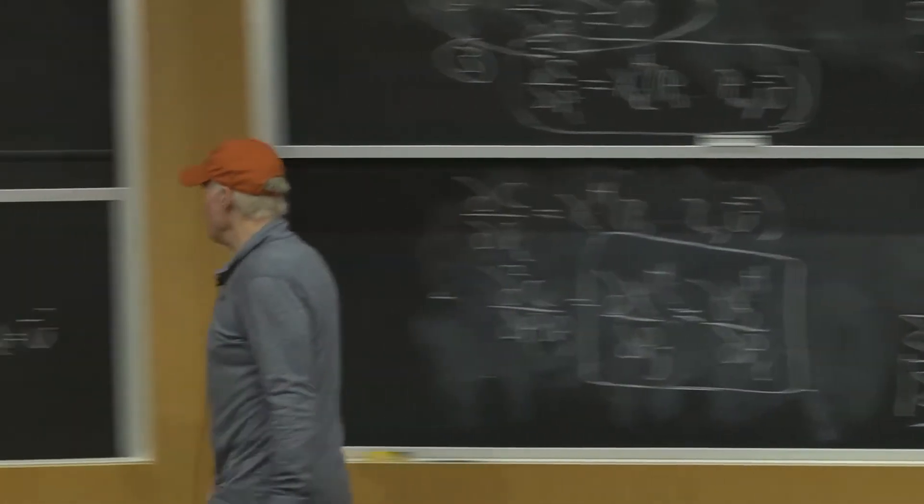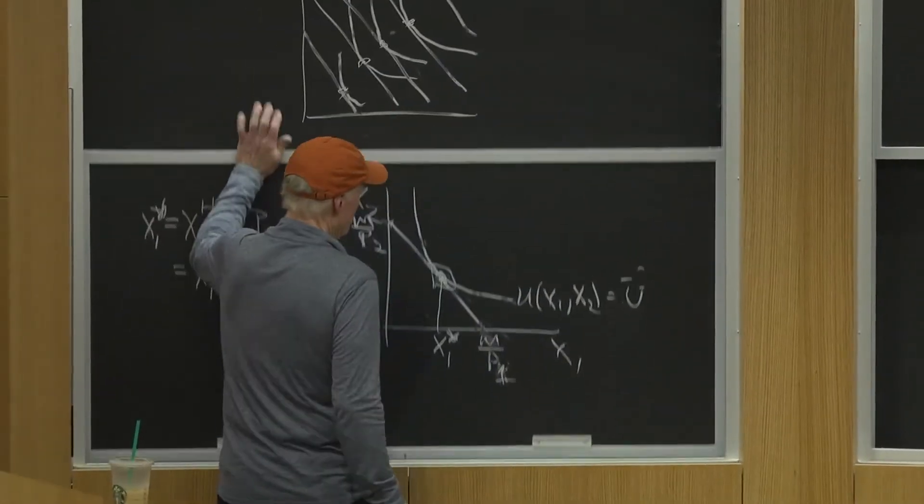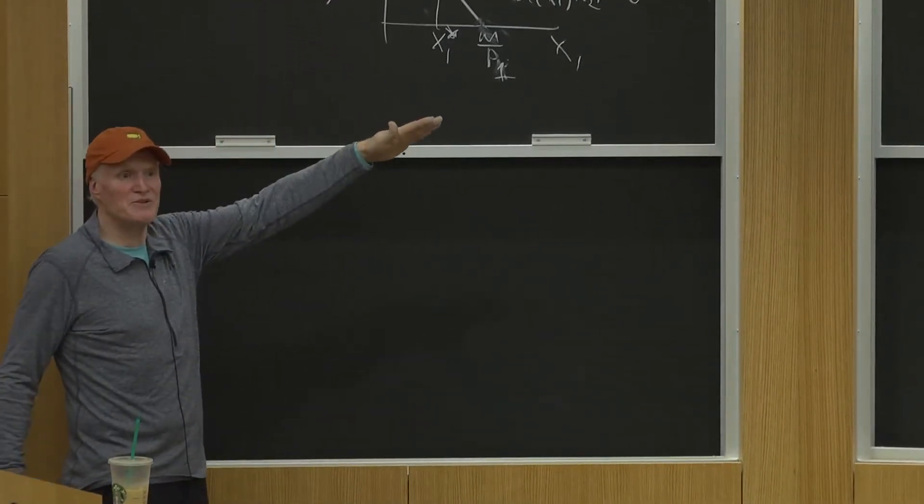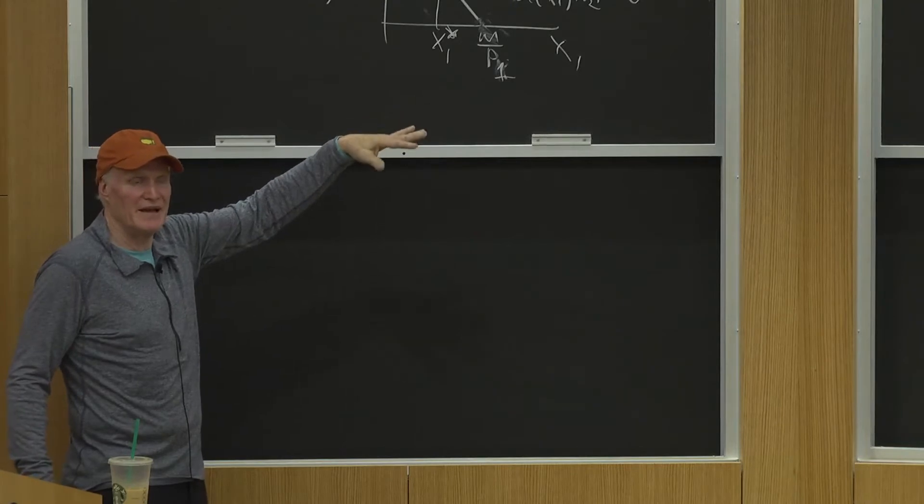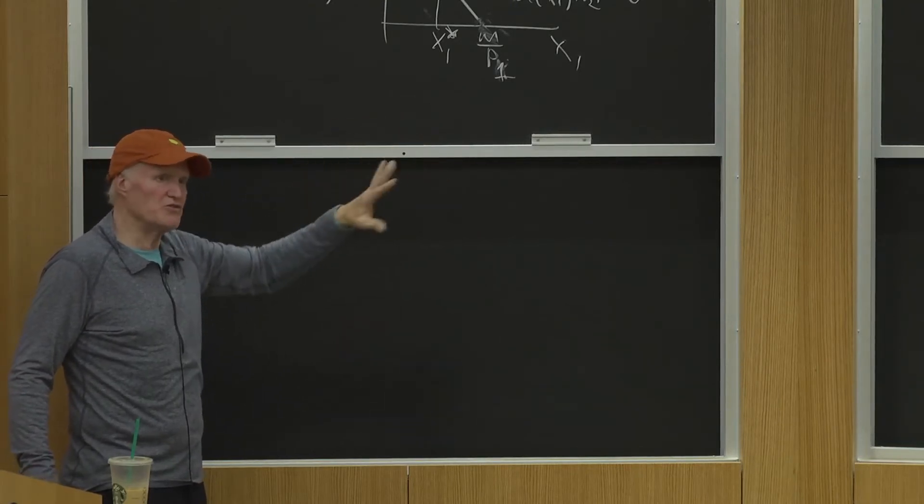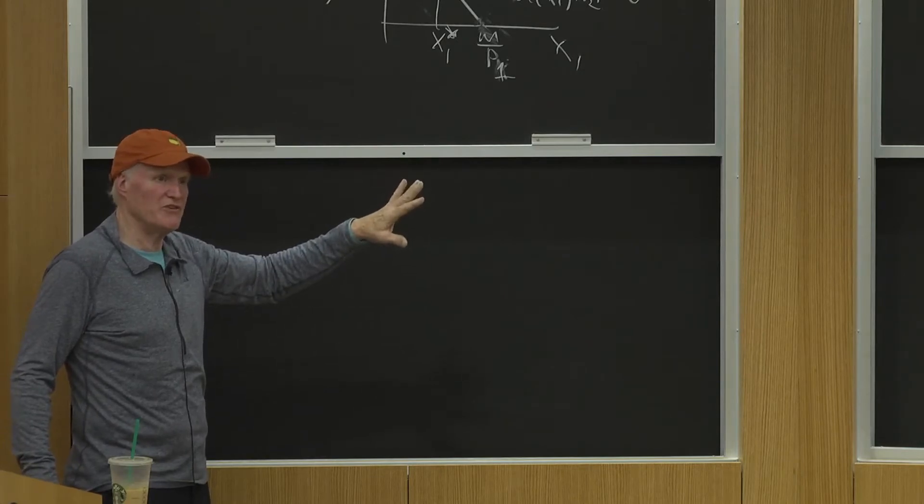Yeah, I mean, well, they don't have to be concave, but there's nothing we assumed about the indifference curves being concave to do this Hicksian demand system, right? It really is just all about this cost minimization issue.